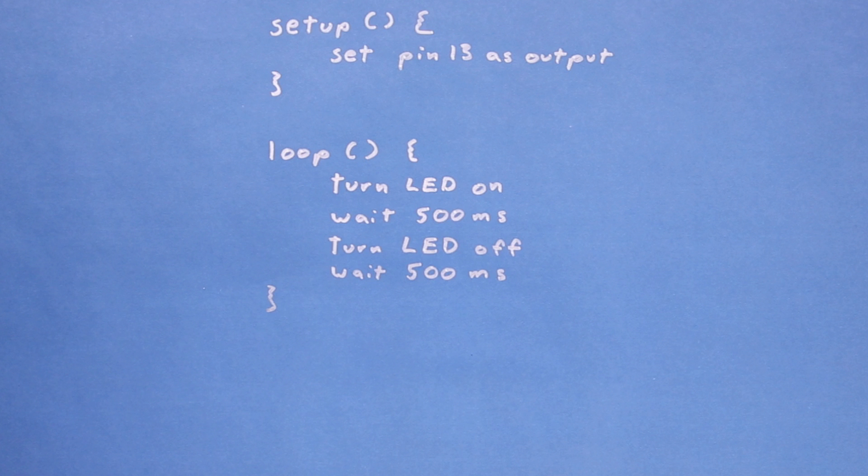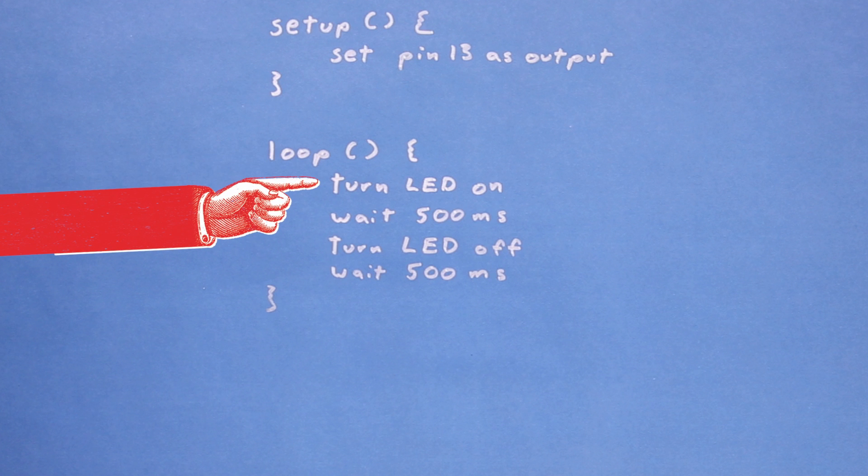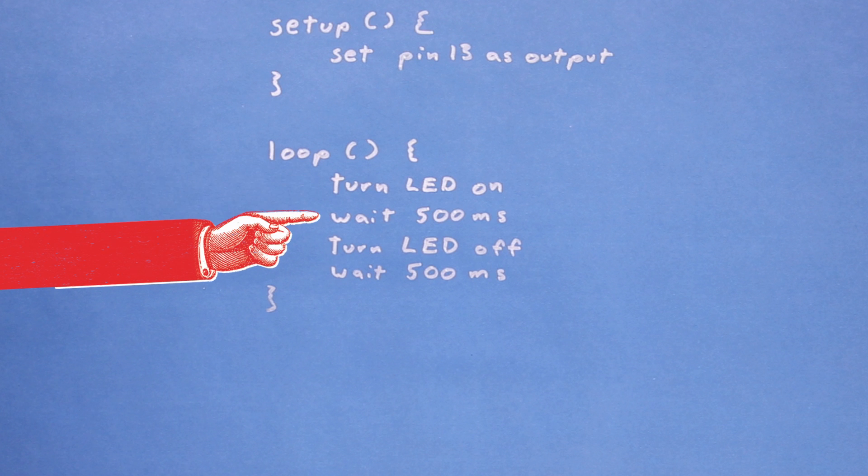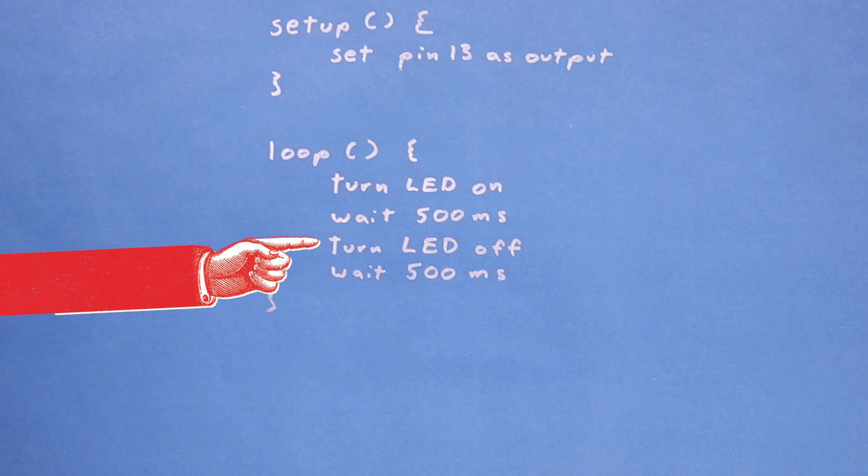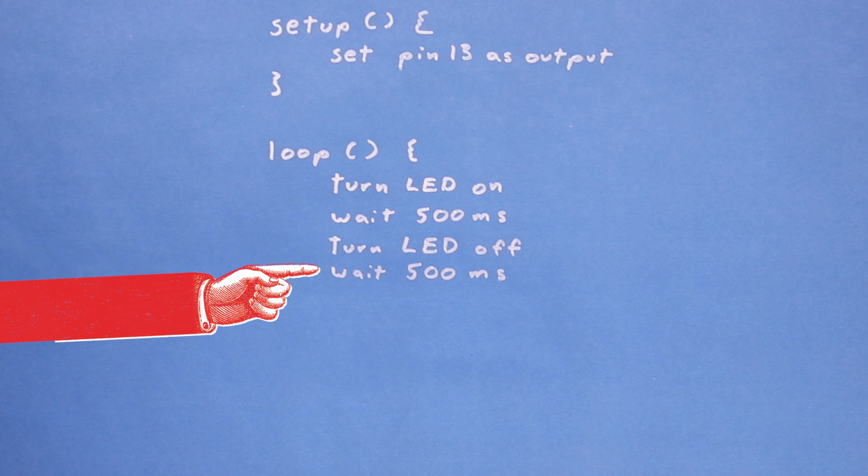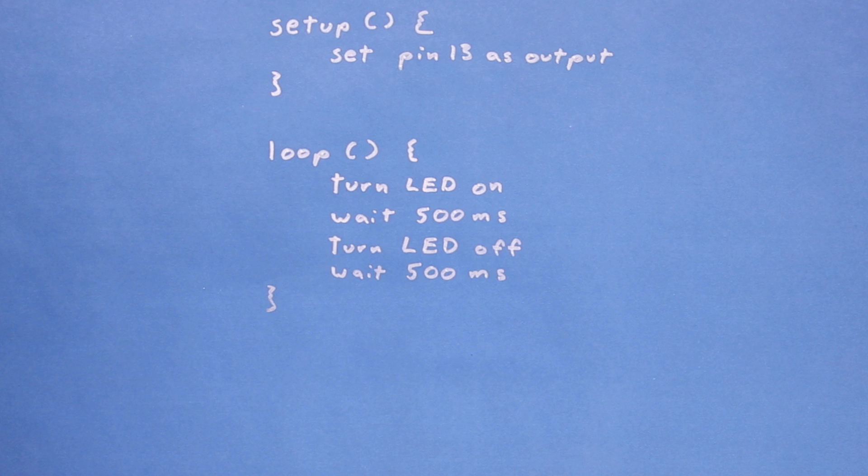Then, we need to flash the LED on and off repeatedly. So, in the loop function, write turn LED on, followed by wait 500 milliseconds, then turn LED off, and wait 500 milliseconds. That's it for our pseudocode. It should be easy enough to read and understand without needing real code.